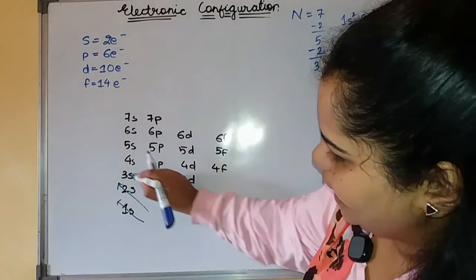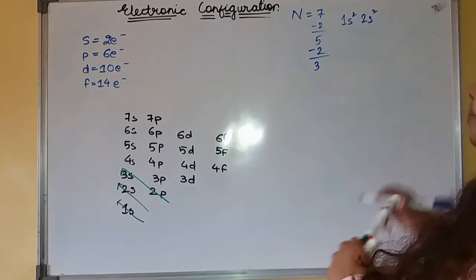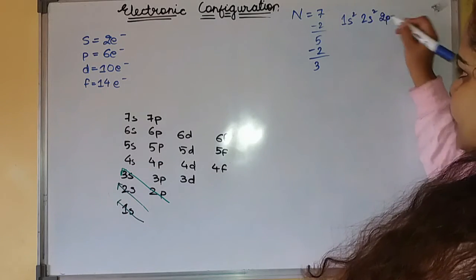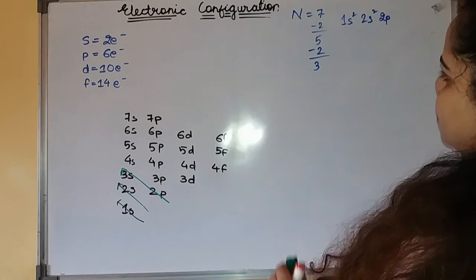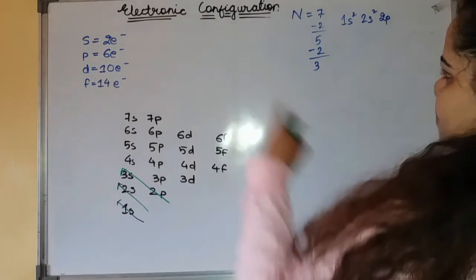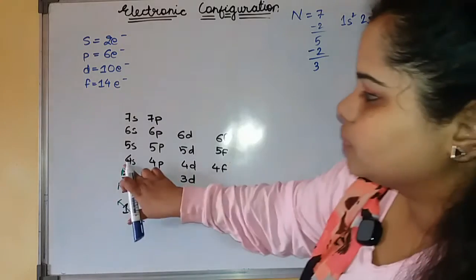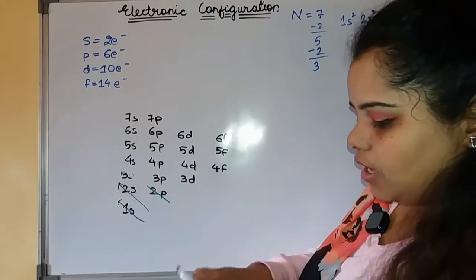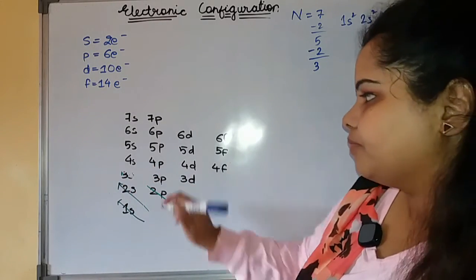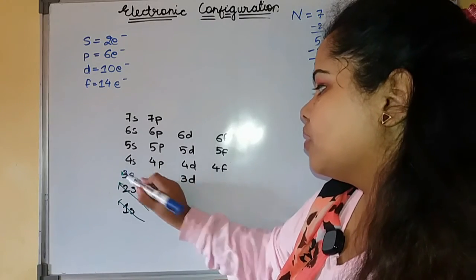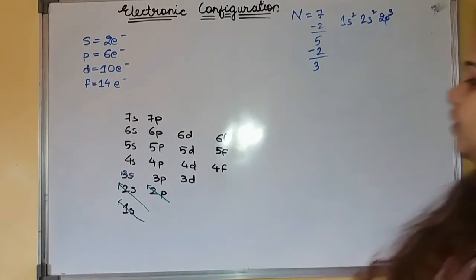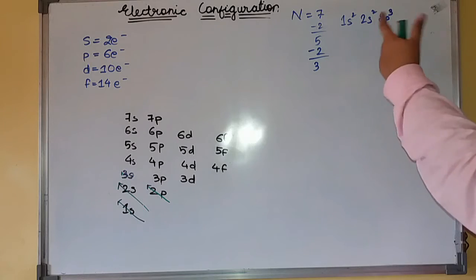Then you have to fulfill 2p and 3s. 2p satisfies 6 electrons. But since you are left with 3, you will write it down here, 3. So your diagram won't reach until here, but until 2p you have written down your electron configuration. 3 plus 2 plus 2 is 7.